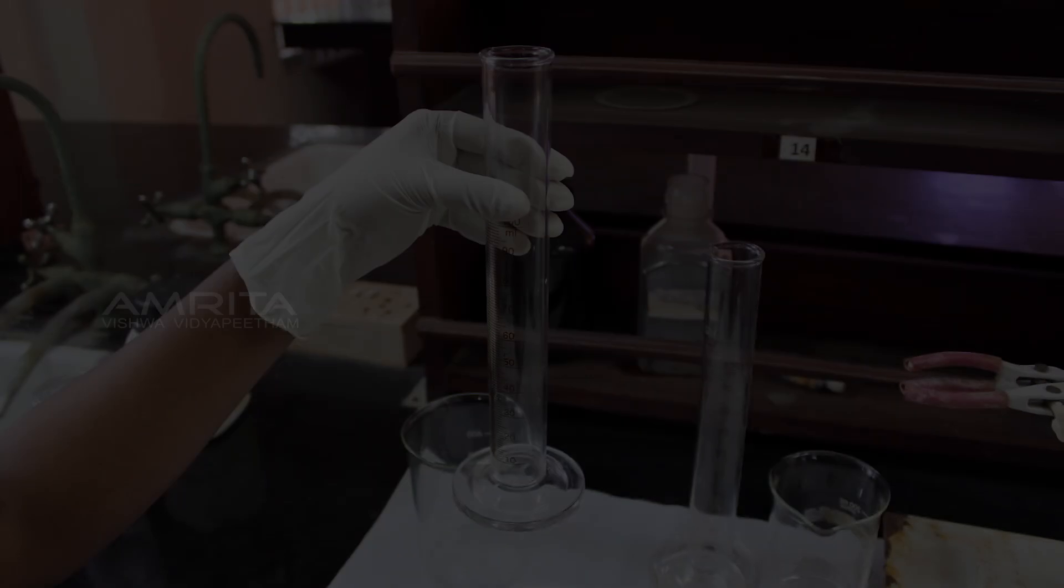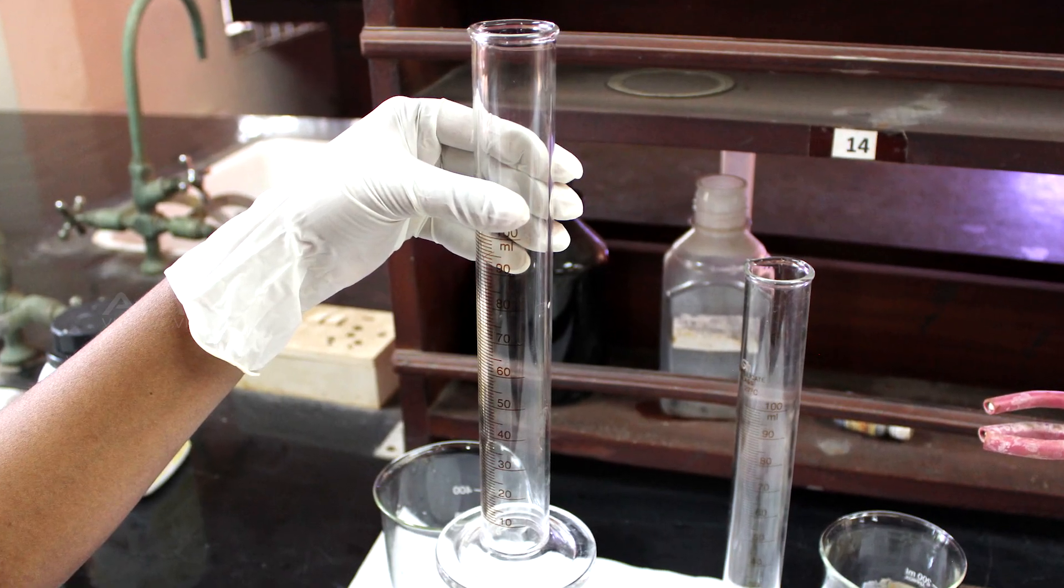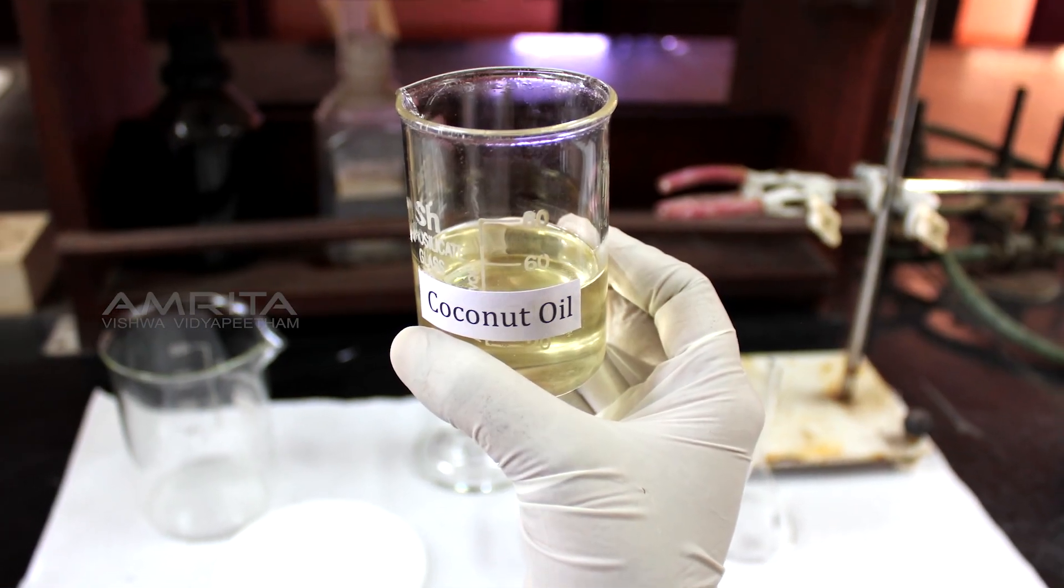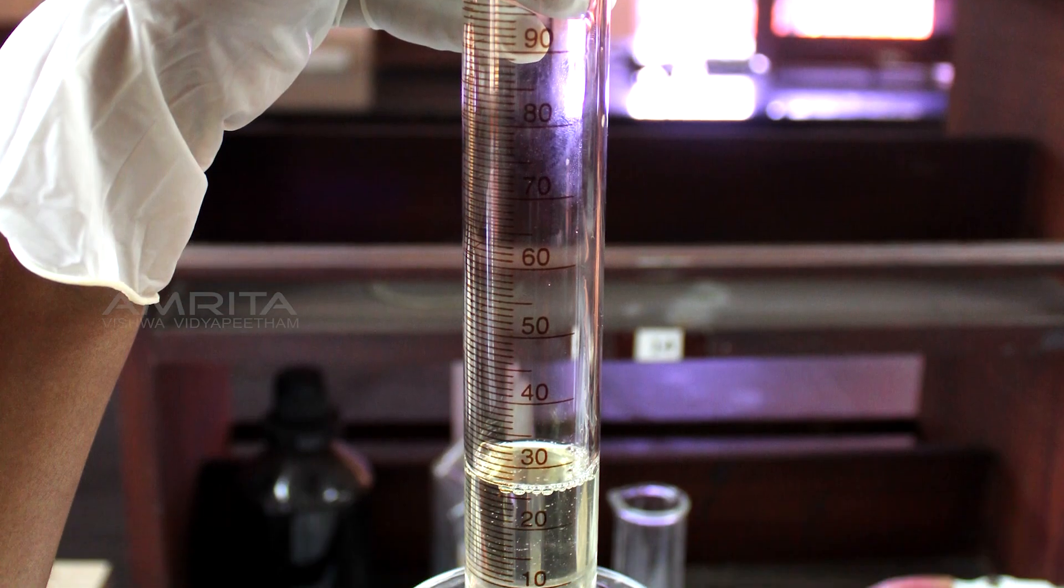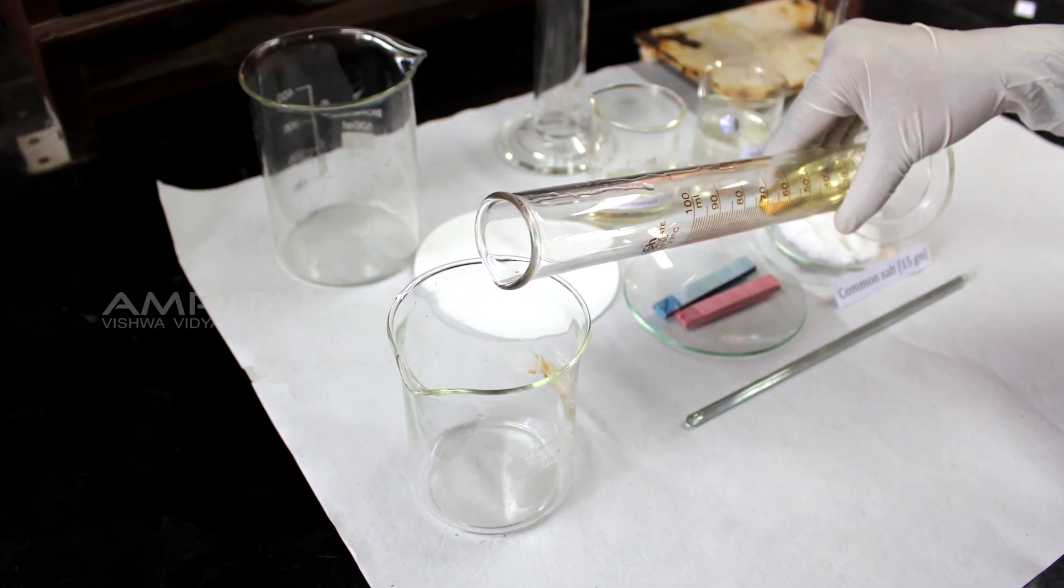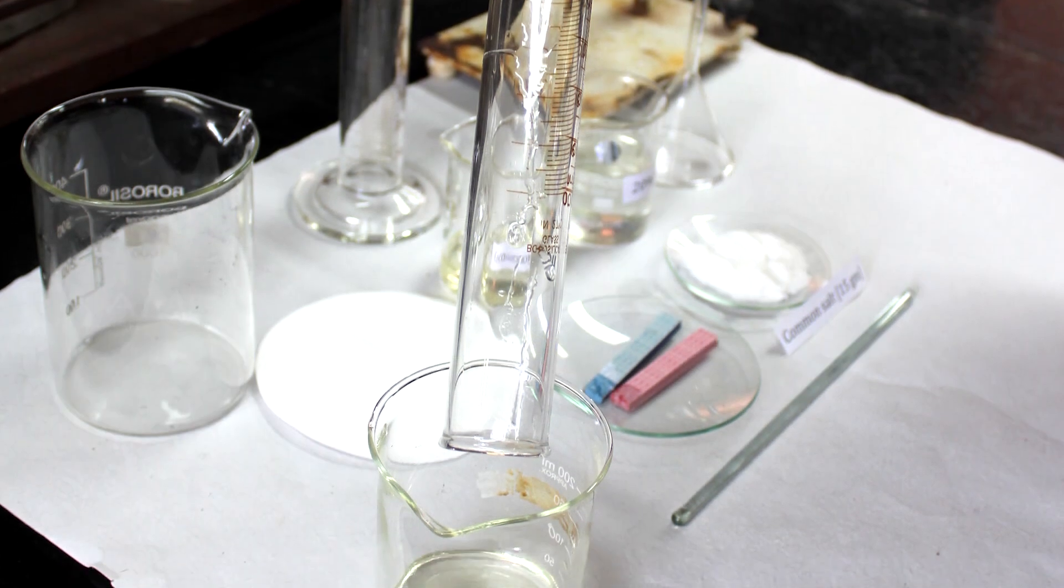Procedure: Take a measuring cylinder. Take a beaker containing coconut oil and pour 25 ml of coconut oil into the measuring cylinder. Next transfer it into a 250 ml beaker.